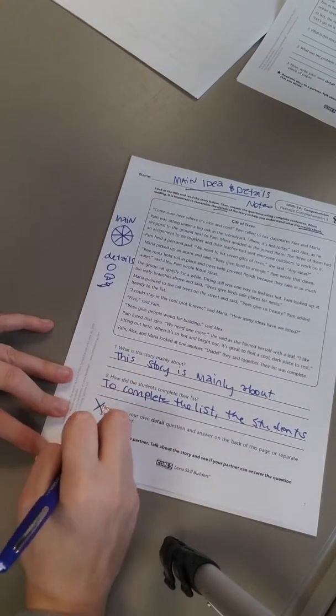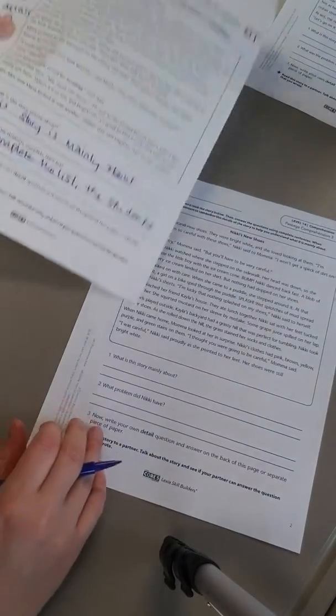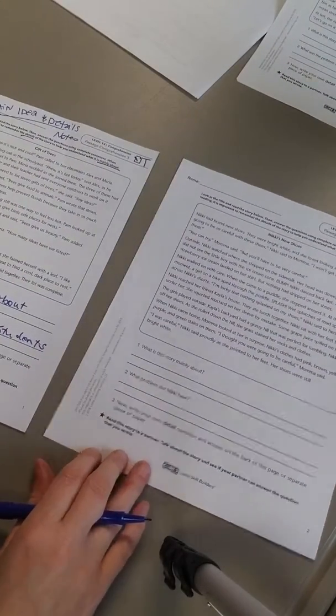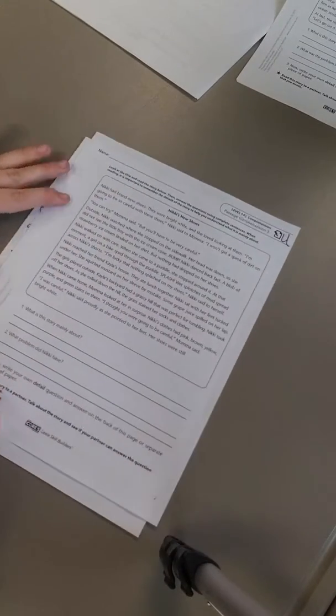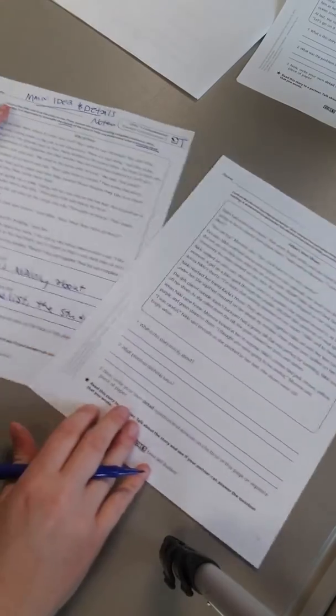Don't worry about number three and don't worry about the star. Once you finish that one, you could go on to Sheet U. You're basically going to do the same exact thing for Sheet U. If you look at Sheet U, it's Nikki's New Shoes. Okay, so those are the two pages you're going to be doing: Sheets T and U.